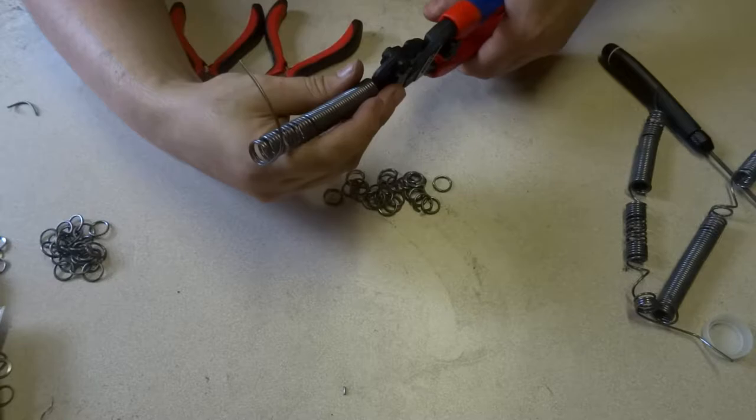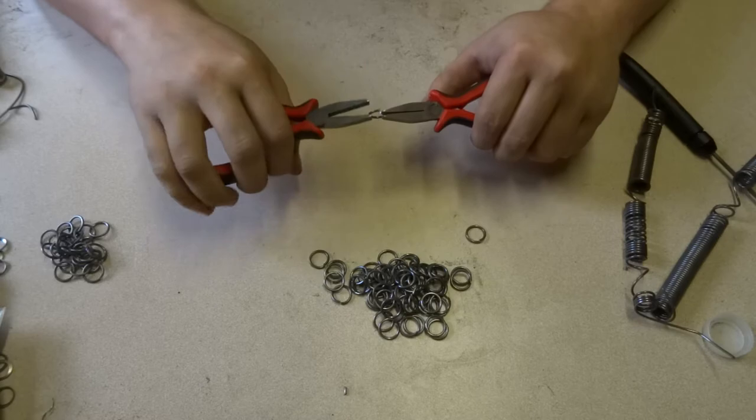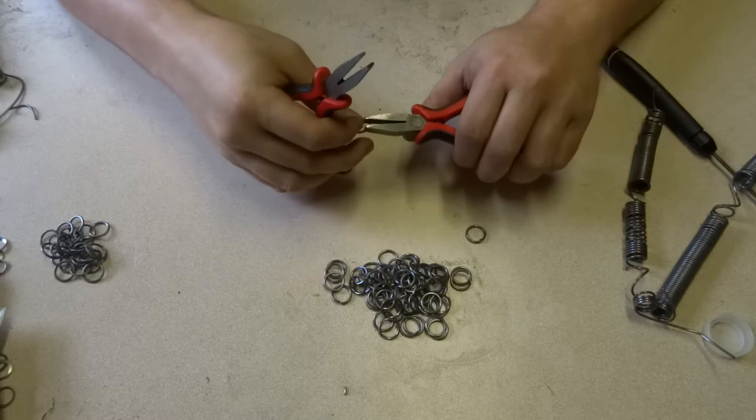After a while, you should end up with a nice little pile of cut rings. Now you can use your pliers to start putting the rings together in the desired pattern. The most common pattern for armor is called European 4-in-1, so that is what I'll be covering here.